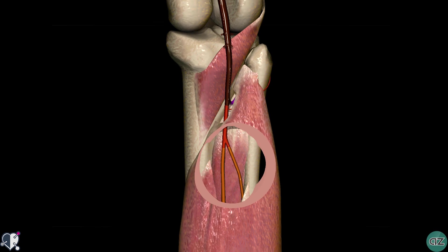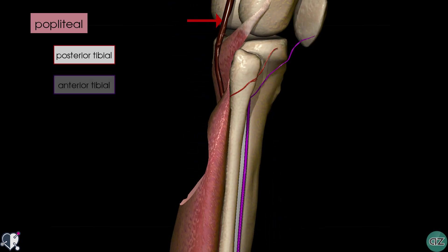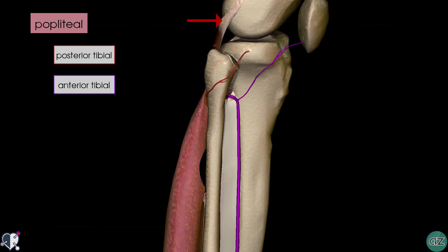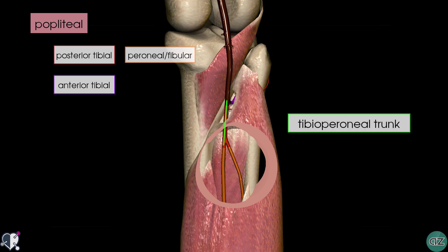What we're looking at here is a posterior view of the knee and the leg. We can see the popliteal artery running behind the knee joint and it gives off two branches: the posterior tibial artery, shown here in red, and if I rotate the model around slightly, the anterior tibial artery in purple. The posterior tibial artery gives off the peroneal or fibular artery. The segment between the origin of the anterior tibial and the origin of the fibular artery is sometimes referred to as the tibiofibular trunk or the tibio-peroneal trunk, which gives off the fibular artery and the posterior tibial artery.